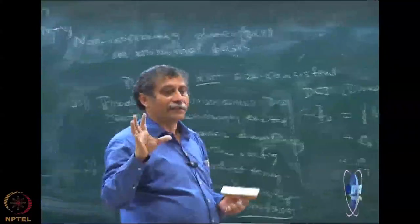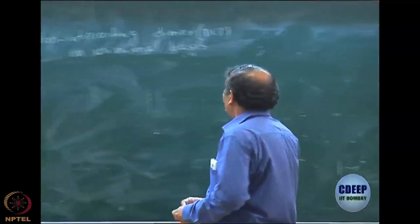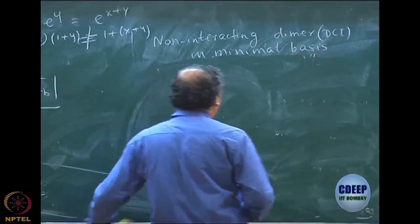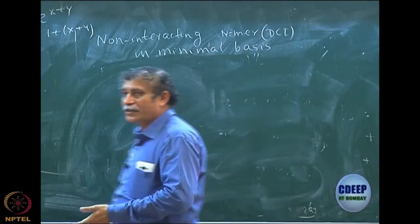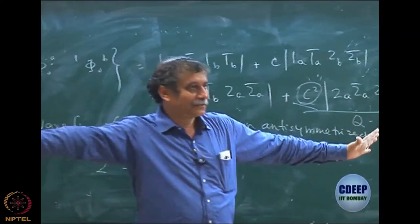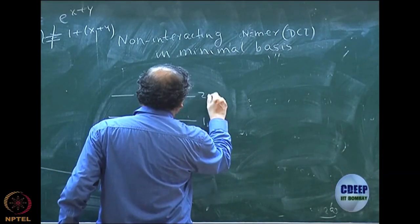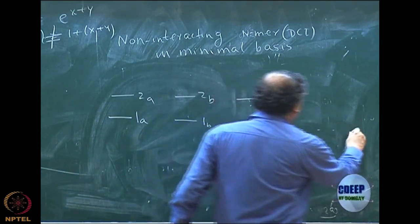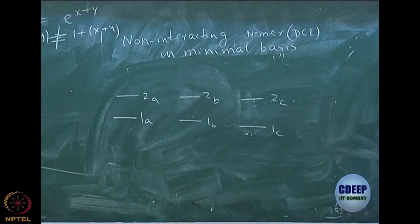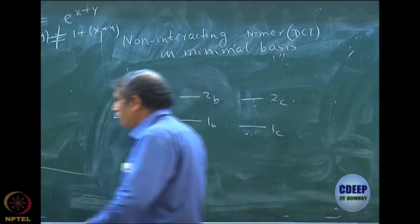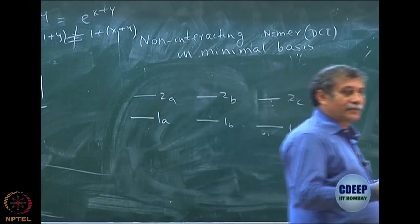Let me tell you what happens when 2 becomes n. I hope all of you can set up the CI matrix once again. Let us now look at not just dimer but non-interacting n-mer. I have n hydrogen molecules, each of them in minimal basis set. I will have now 1A, 2A, 1B, 2B, 1C, 2C, etc., and they are non-interacting, meaning each of them is far apart from the other. So if I do the exact calculation, the energy of this system will be n times the energy of the monomer.